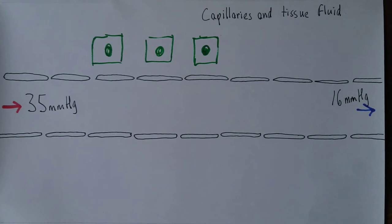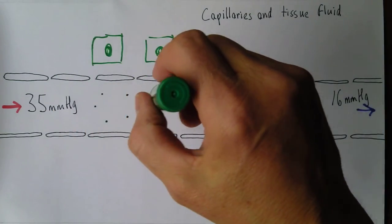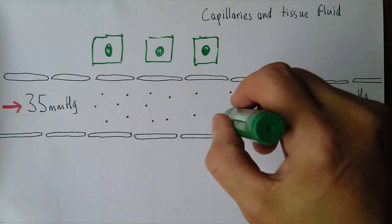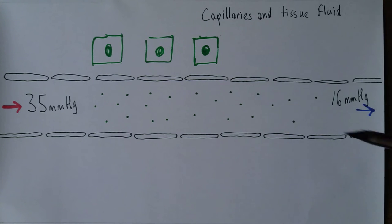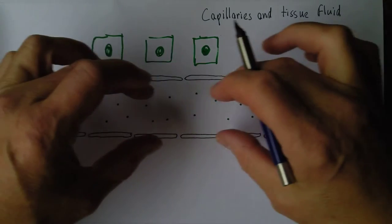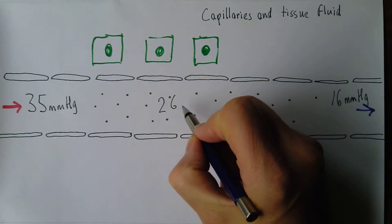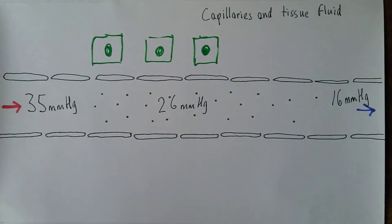In plasma there are some large plasma protein molecules. The most common plasma protein is albumin, with a molecular weight of 69,000 — a very big molecule. Then there are globulins, the immune proteins, with an even higher molecular weight of 140,000. There's also a little bit of fibrinogen, the clotting protein, with a molecular weight of 400,000. The main one is albumin, contributing about 80 percent of the effect. The combined effect of these plasma proteins generates an osmotic pressure of about 26 millimeters of mercury.